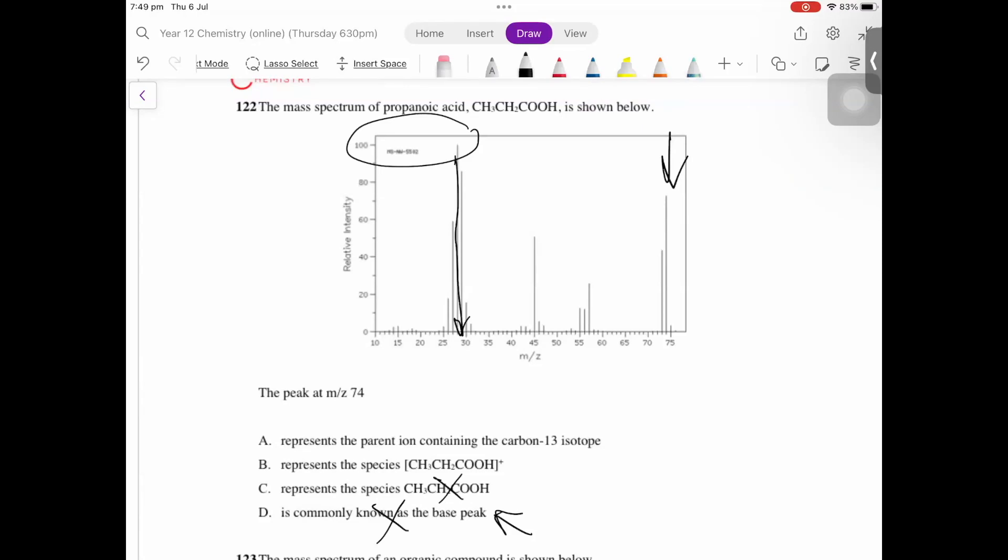So the answer for C is also not correct. Because C gives you the formula as the neutral molecule. The neutral molecule does not create the peak. The charged molecule does. So in this case, because it's at the very end, which means it's the molecular ion peak, the molecule just has the electron knocked off.